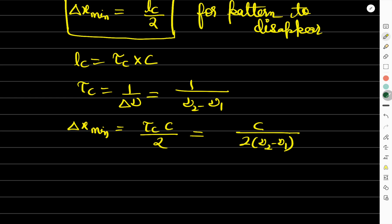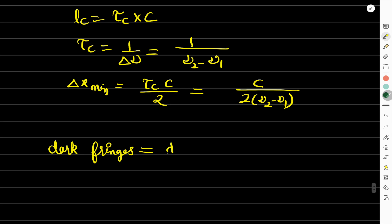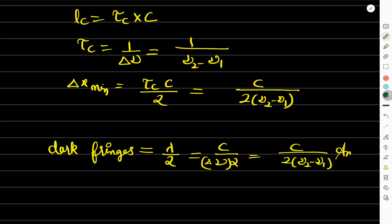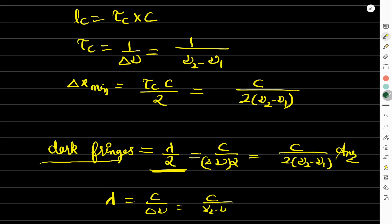So the minimum path difference is c / (2(ν₂ − ν₁)). You can verify directly: for dark fringes the path difference is λ/2. Writing λ = c/ν, we get c/(2ν). Therefore Δx_min = c / (2(ν₂ − ν₁)), which matches the expected result.